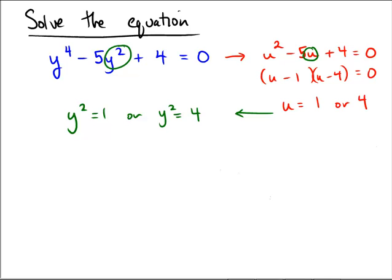If you did want to see that factoring, I guess you could go like this and say y squared and y squared, because those are taking the roles of the u's. What numbers do you know that multiply to 4 and add to negative 5 are minus 1 and minus 4? And so you're getting either y squared equals 1 or y squared equals 4.